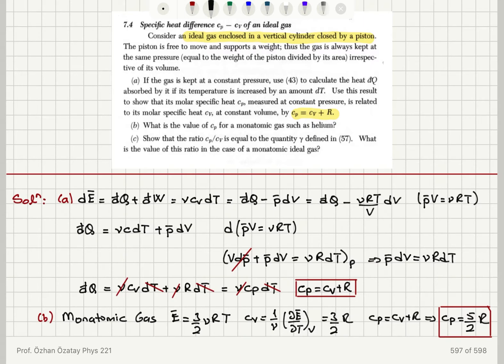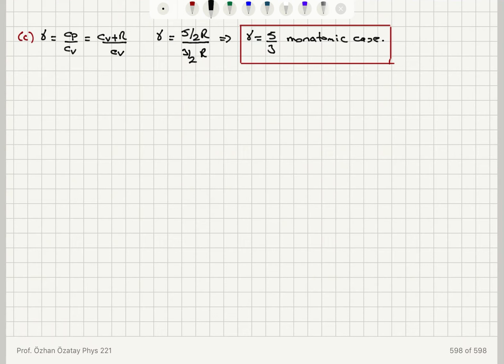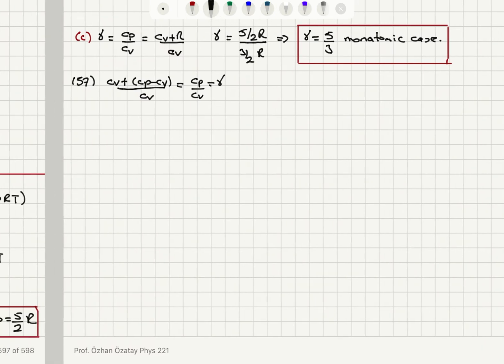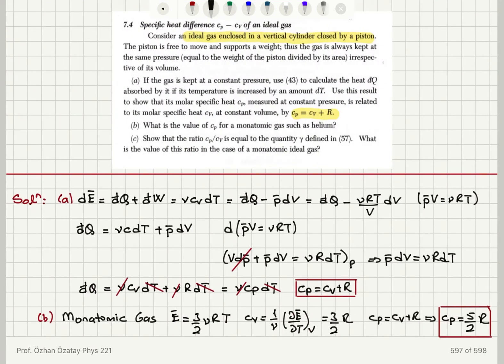The gamma defined is basically cv plus r over cv. So for cp minus cv over cv is gamma, which means cp over cv is gamma. That's what is mentioned in the problem statement.